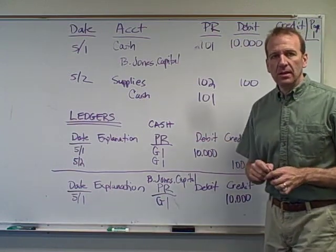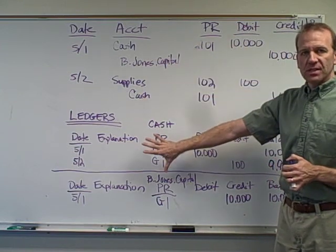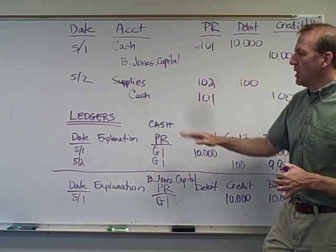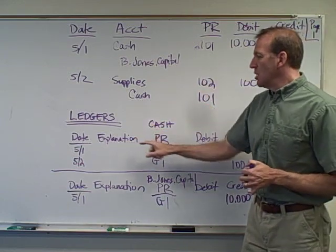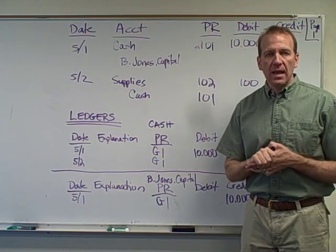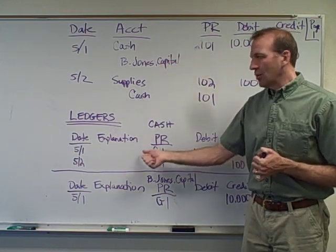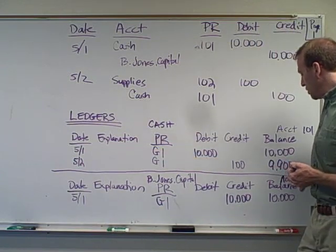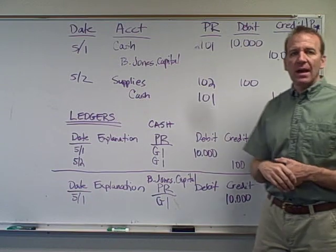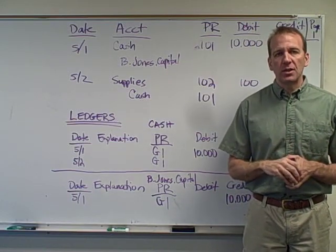Hopefully this makes sense. Just a step-by-step look at the journals versus the ledgers. The journals have all of the transactions, one right after the other. The ledger tracks the balance. So if someone ever asked me what's the balance in cash, I don't go to the general journal — I go to the ledger. I look at the bottom of the ledger and I can see my balance in cash is $9,900. Every account has its own ledger.